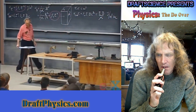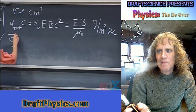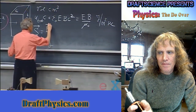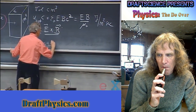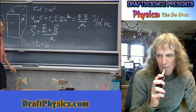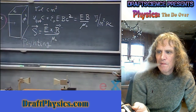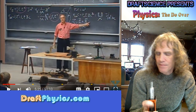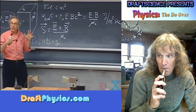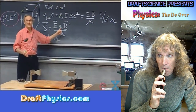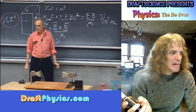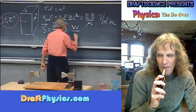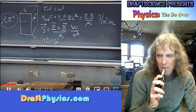We call this the Poynting vector, written as a vector S, defined as E cross B divided by mu-zero. In a traveling wave, E and B are always perpendicular, so the cross product gives the direction of energy flow. The Poynting vector tells you both how much energy flows and in which direction the radiation is propagating. The units are watts per square meter — joules per second per square meter — to a plane perpendicular to the direction of propagation.